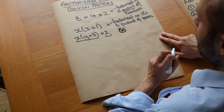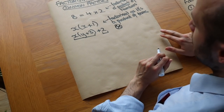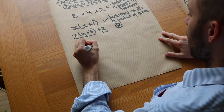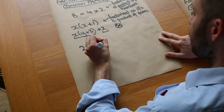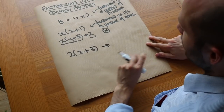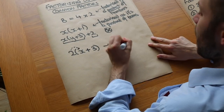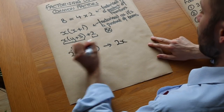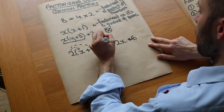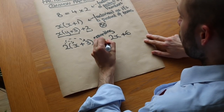Factorization can also be thought of as the opposite of expansion. If we had 2(X+3) and expanded it, we do 2 times X which is 2X, and 2 times 3 which is 6. So expanding gives us 2X+6. But if we want to do the opposite and factorize, we reverse that process.